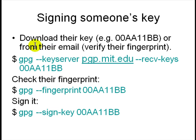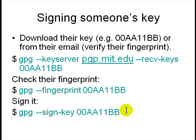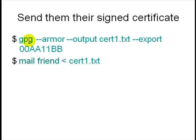To sign someone else's key, you download the key using 'gpg --recv-key' with your friend's ID or email ID. Then you say 'gpg --fingerprint' of that key and get a fingerprint number. You call up your friend and ask 'is this your fingerprint?' — if they confirm, you say 'gpg --sign-key' and the key gets signed. Then you upload the signed key back to the server, or export it as ASCII using 'gpg --armor --export' into a file and mail it to your friend. The friend can upload it to the server so they have a certificate signed by you.